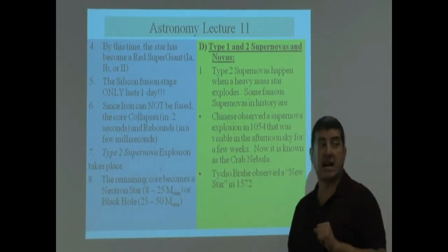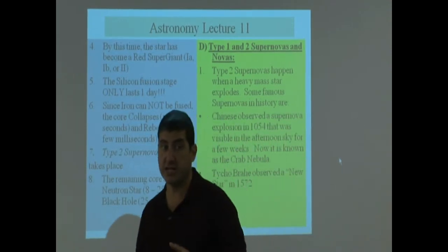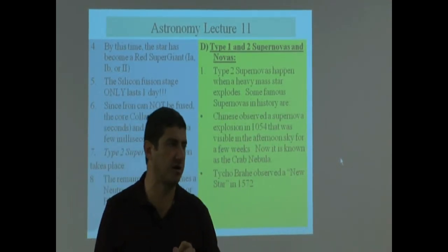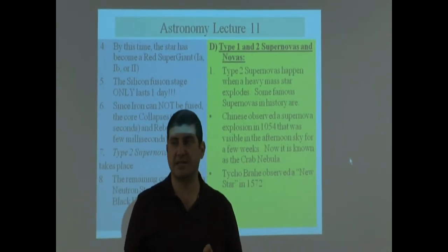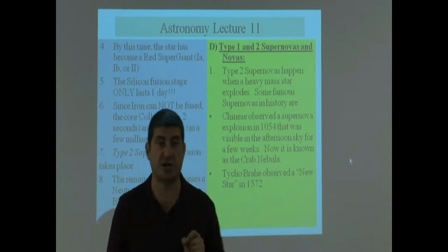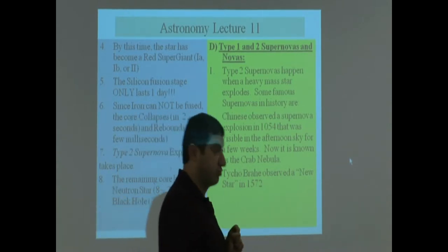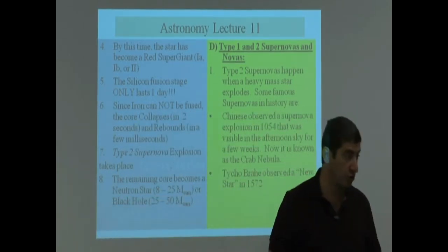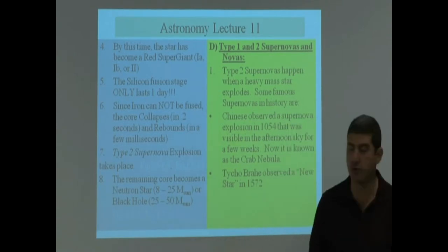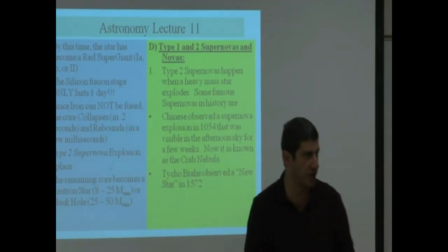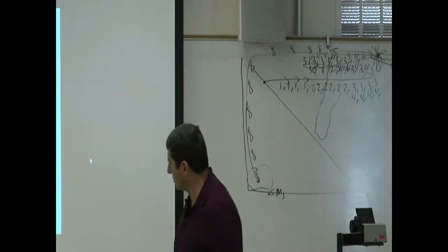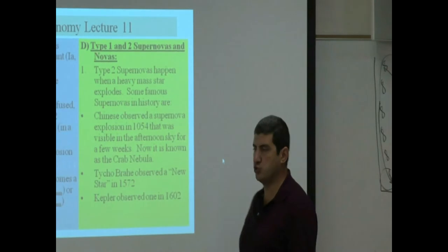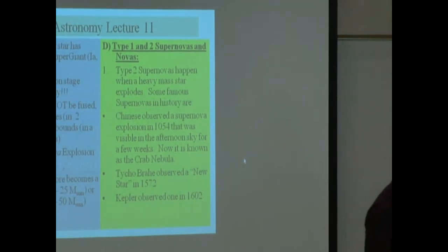Another one that Tycho Brahe observed, when we were talking about Tycho Brahe's history, we said he observed a new star and he wrote about this new star. It actually ends up that he was wrong. This wasn't a new star that was forming, it was a very bright star that exploded, and it was so bright that the explosion was observable by him, Tycho Brahe. It was 1572. Kepler observed one in 1602.